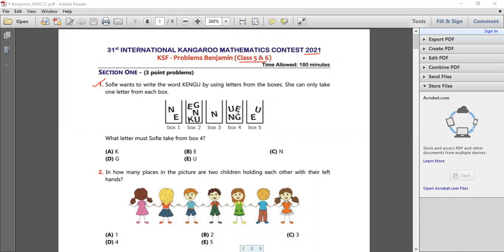Now we have five boxes and each of them have different alphabets. And they are saying she has to only take one letter from each box.